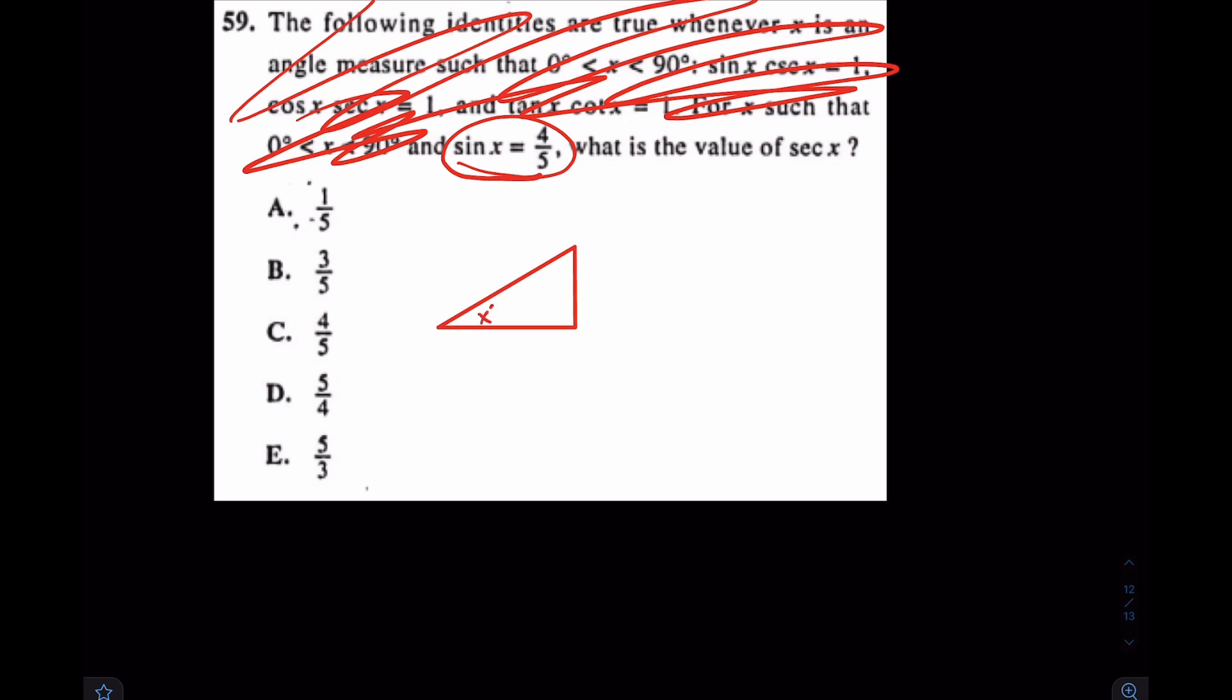Because the second I see sine of x equals 4 fifths, I just draw myself a triangle. I say, okay, well, that angle is x, and it's saying opposite and hypotenuse goes like that. Sine of x is 4 fifths. Well, at that point, they're asking for secant. Well, secant is 1 over cosine.